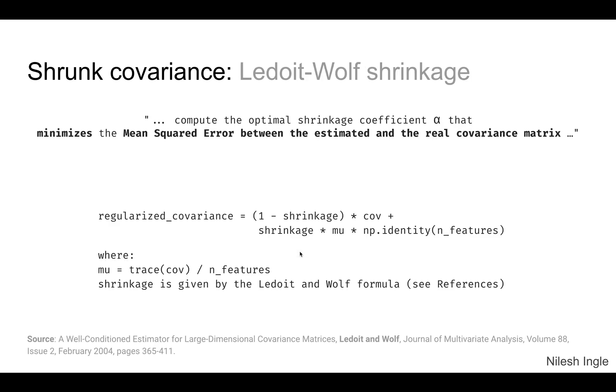Next there is Ledoit-Wolf shrinkage. What this method does is it minimizes the MSE or mean squared error between the estimated and real covariance matrix. We are not going to discuss this in further detail than saying that the way this is calculated is by this equation right here. If you need more mathematical insight then I've listed the paper down below here as a reference.